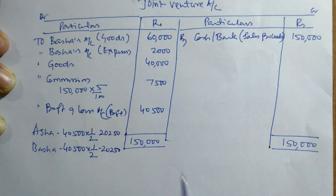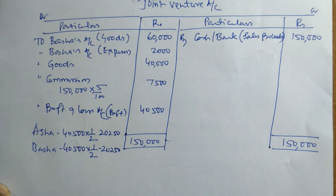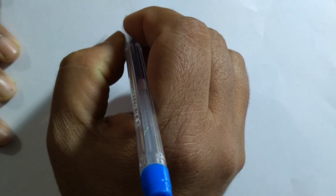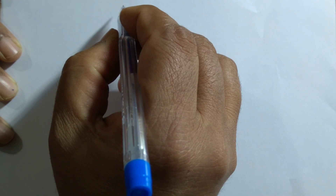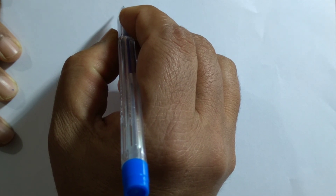In this way, the joint venture account is prepared. Now let us prepare Basha's account.